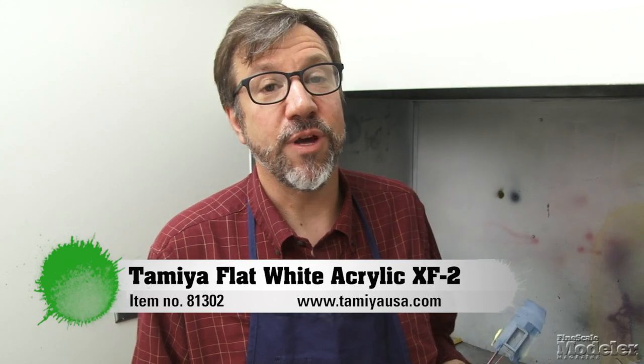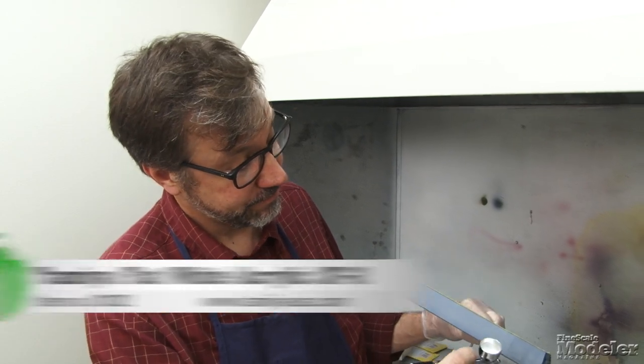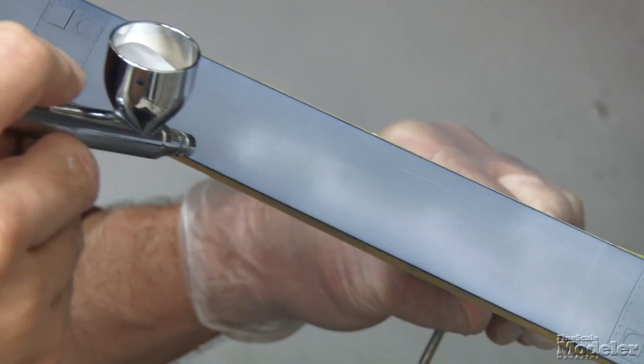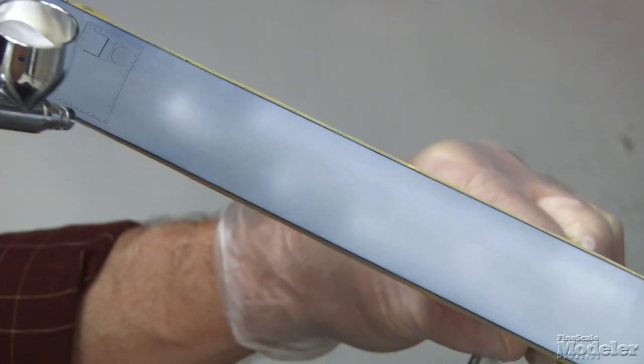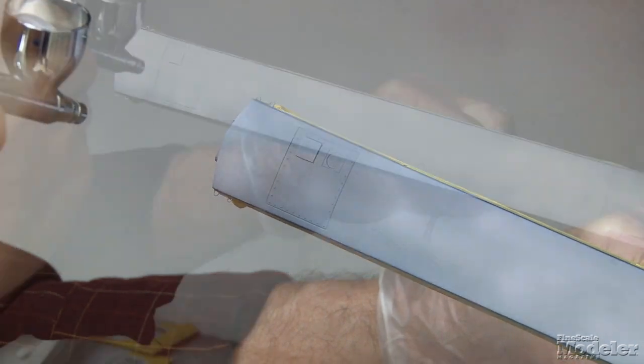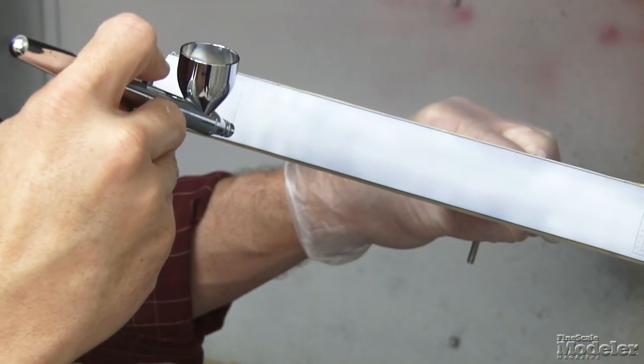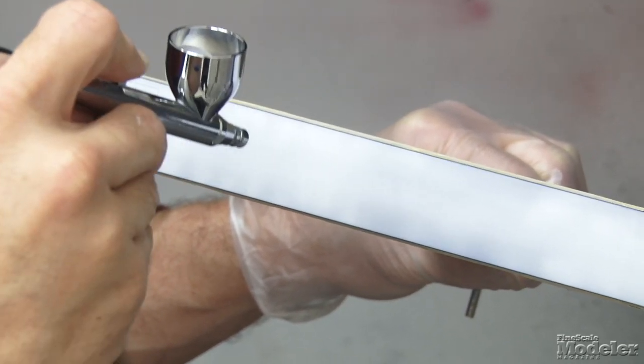So I've got some Tamiya flat white mixed with Tamiya lacquer thinner in my airbrush and I'm ready to go ahead and paint the roof of my car. White is one of those colors you want to lay on slowly and not try to do it too heavy because it will take some time to cover and you don't want to overload the surface and cause runs.